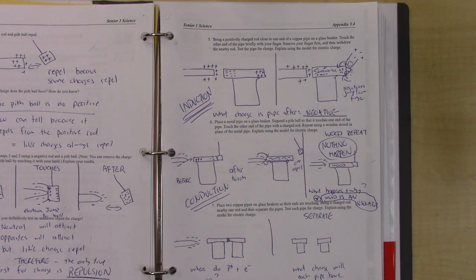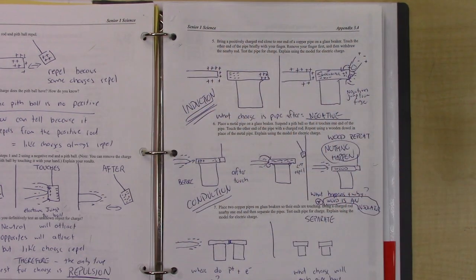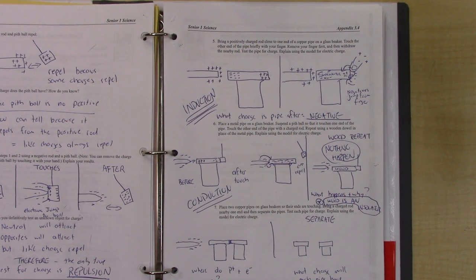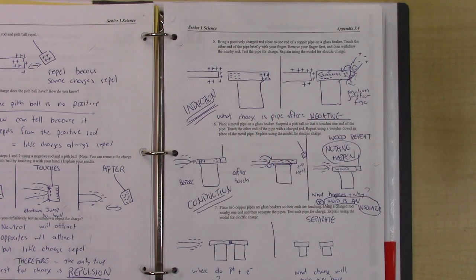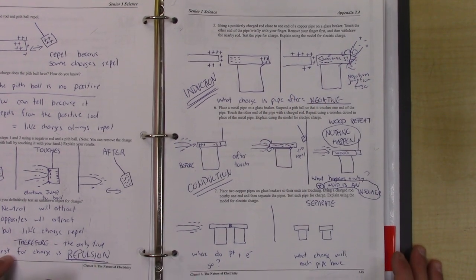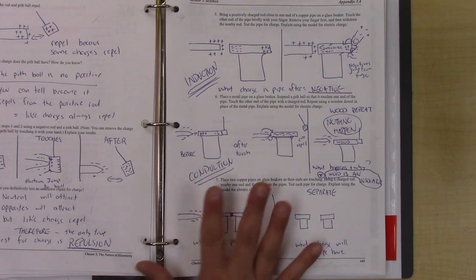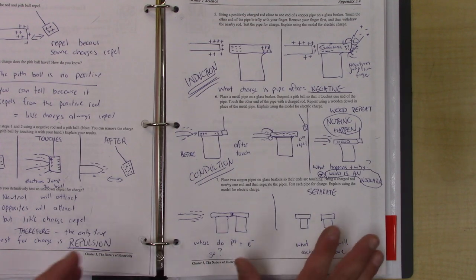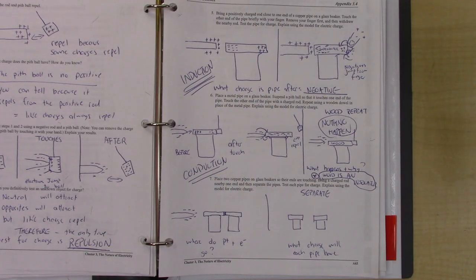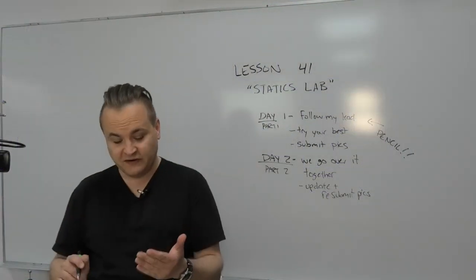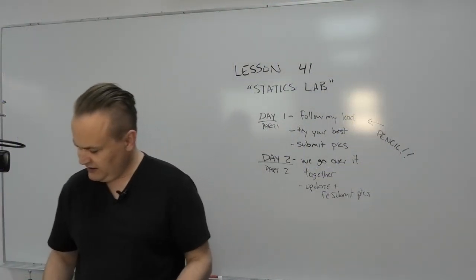Nothing happens because wood is an insulator. Write that down: nothing happens because wood is an insulator and does not let electricity flow through it. Pause if you need to write the theory down and we'll move on to the last one. I guarantee this last experiment will fail — I've already got two of the hard ones correct, so the third one must be cursed.